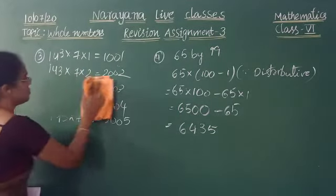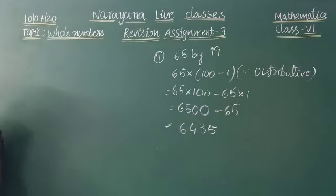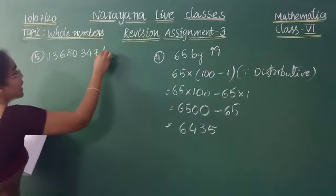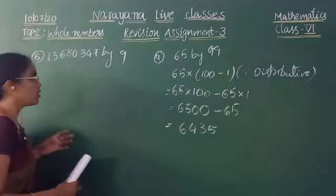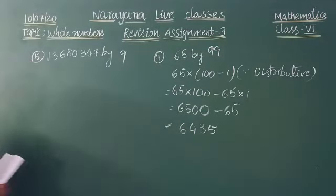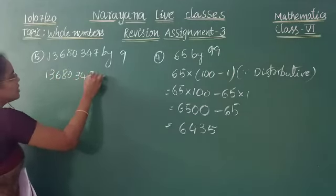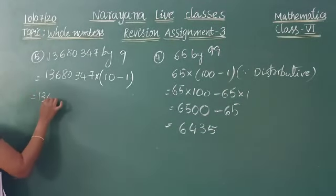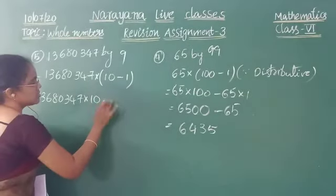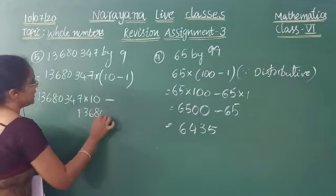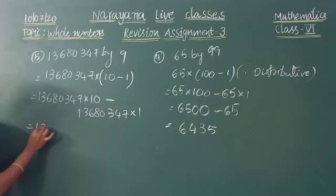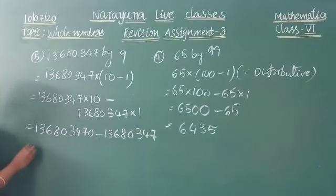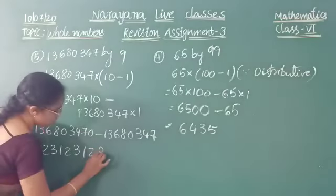Same as the fourth question, the fifth question asks: how would you multiply 13680347 by 9? Here, 9 can be written as 10 − 1. Using the same distributive property: 13680347 × (10 − 1) = 13680347 × 10 − 13680347 × 1 = 136803470 − 13680347. Subtracting, you get the answer 123123123. This is the pattern.